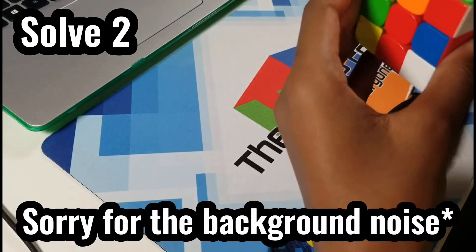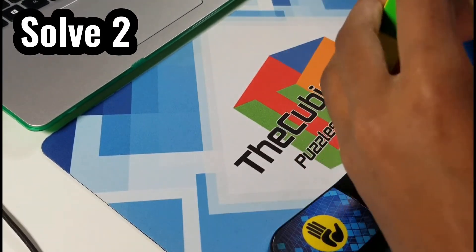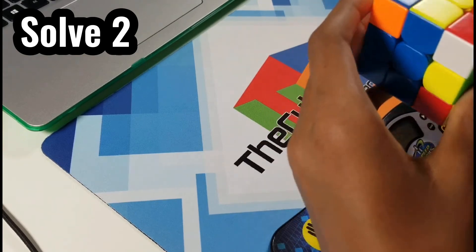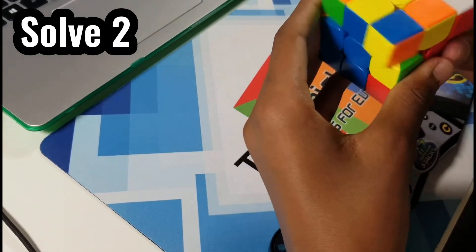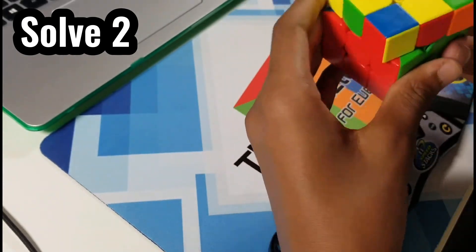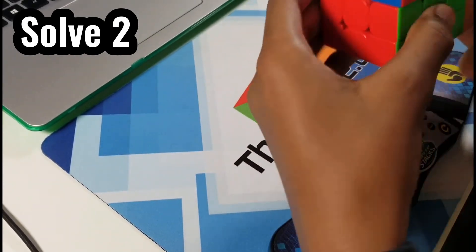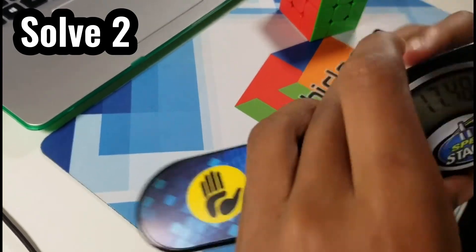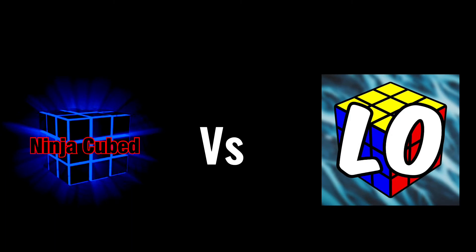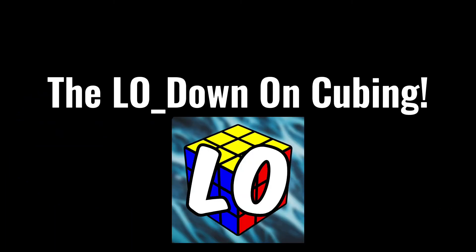Okay, so the low down on cubing starts his second solve. A decent cross here, now moving on to F2L, a bit out of frame, unfortunately. Some decent F2L solutions, as you can see here. And then already onto OLL, wow, that was fast. And then we have actually a J perm for a total of 17.480. The second round winner is the low down on cubing.